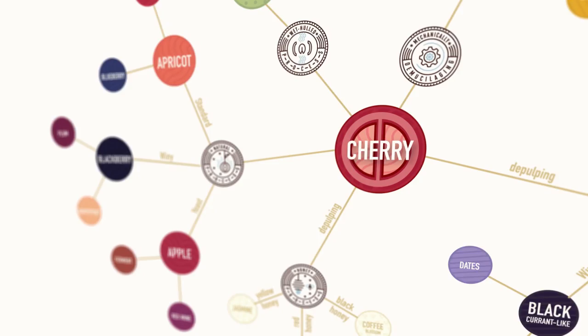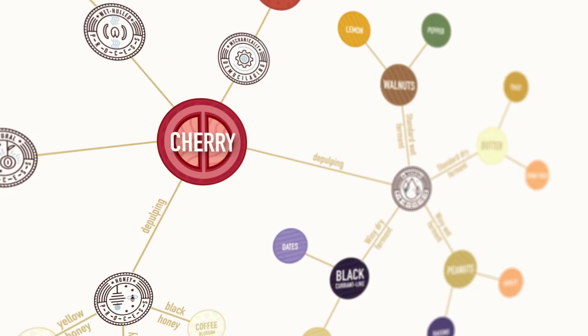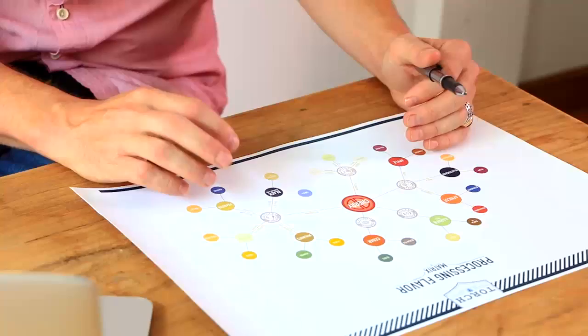This processing matrix we're looking at here was specifically done for Puer, China, based on our workshop there. If we go to other countries and do other workshops, we'll have different processing flavor matrices that describe the flavor attributes of the different processes in different areas, and they'll be completely different.